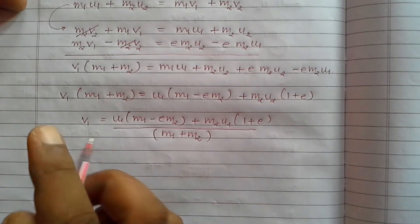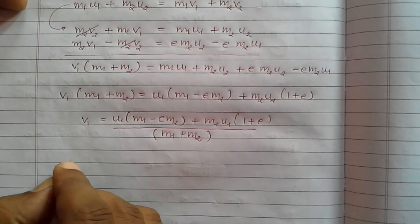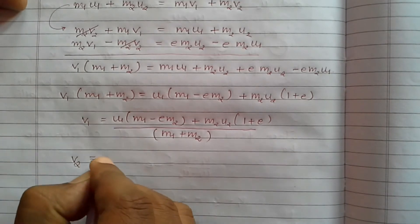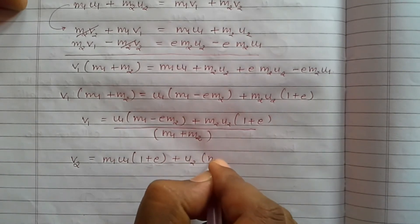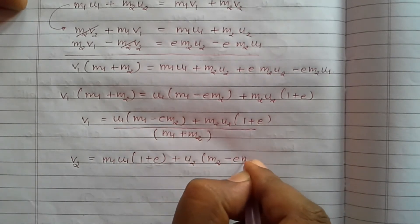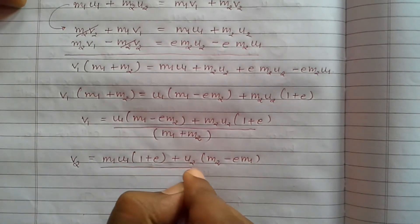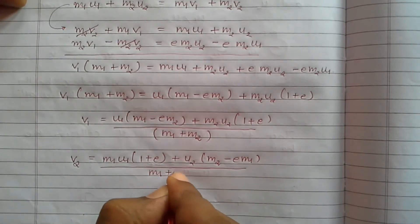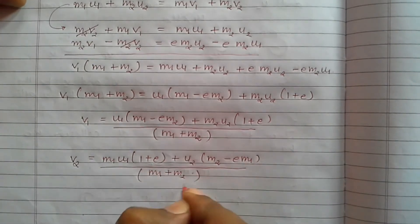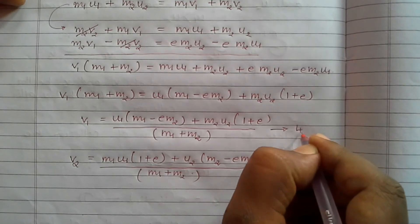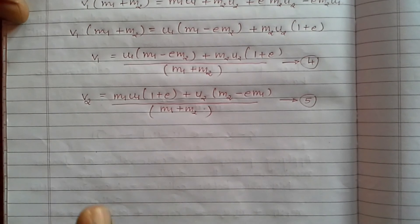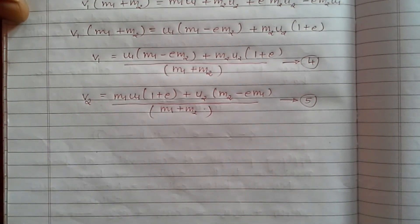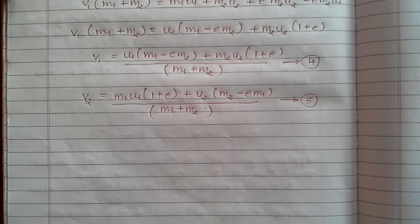Similarly, by multiplying M1 to Equation 1 and solving as in the previous case, we can derive V2 equals [M1·U1·(1 plus e) plus U2·(M2 minus e·M1)] divided by (M1 plus M2). Let this be Equation 5. Thus Equations 4 and 5 give us the expressions for the final velocities after collision.